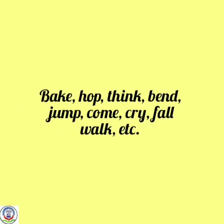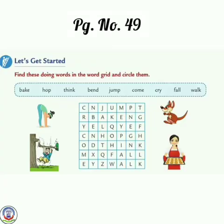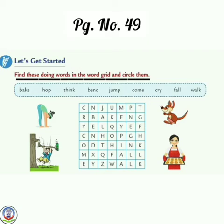Children, in sabhi words se ye show ho raha hai ki koi na koi action ho rahi hai. Look at this grid. Let's read it. Find these doing words in the word grid and circle them. Yeh grid di gai hai. Isme se hume saare doing words dhundne hain jo upar box mein diye huye hain.